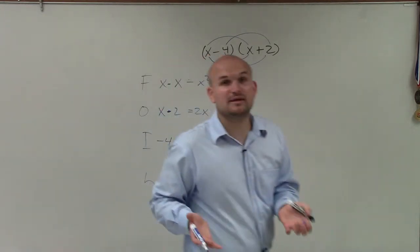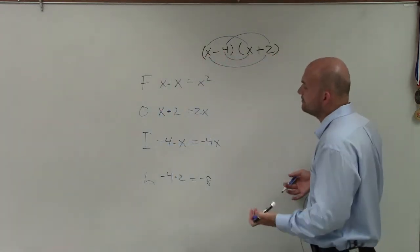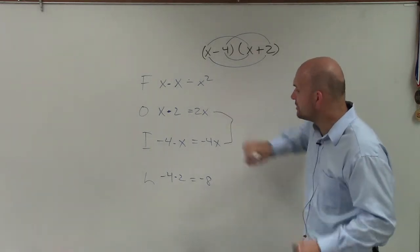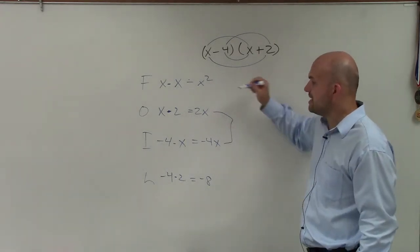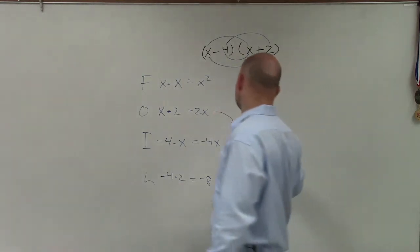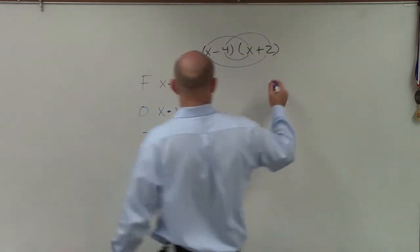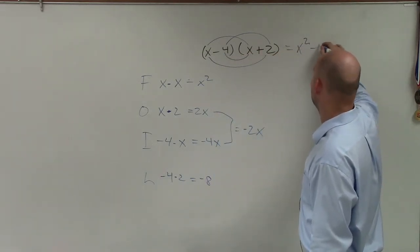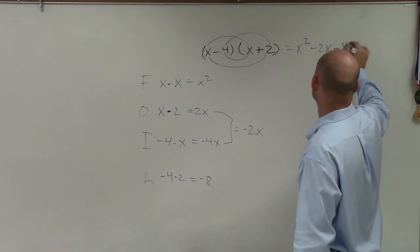Now all we want to do is see if we can simplify this, if there's any other terms we can combine. Well, the only terms that have the same variable factors are our outer and our inner. So then I just combine them. So 2x minus 4x is equal to a negative 2x. Therefore, my product is going to be x squared minus 2x minus 8.